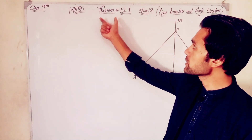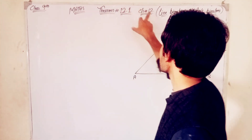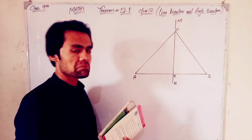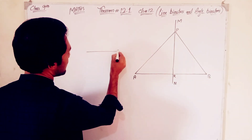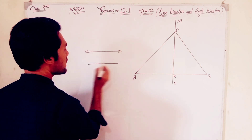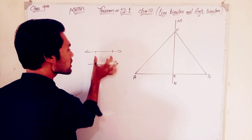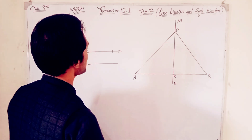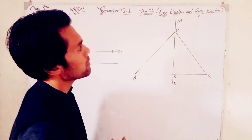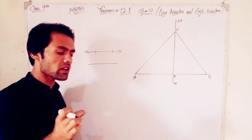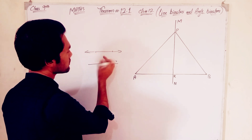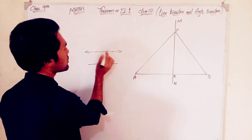Bismillahirrahmanirrahim. In Class 12.1, Class 9, Chapter 11: Line Bisector. By 'bisector' means to divide a line segment. Line bisector, line bisector — a bisector divides a line.